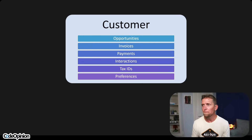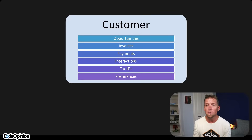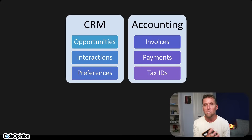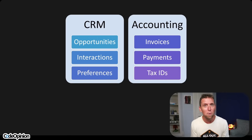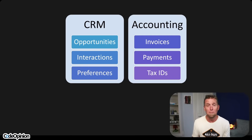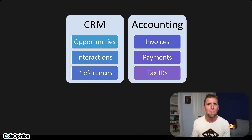If we have the concept of a customer within a system, we have different things like opportunities, invoices, payments, different interactions, tax IDs, and preferences. Or more likely, there's a CRM portion — maybe something external like Salesforce — where we have leads, opportunities, interactions, and contact preferences. And separately, there's an accounting system where you're dealing with invoices, payments, and tax IDs. Same customer in the real world, two very different customers in your system — including when part of your system is integrating with something external.